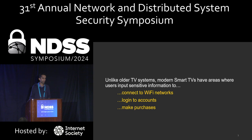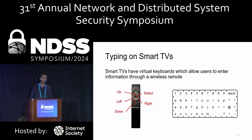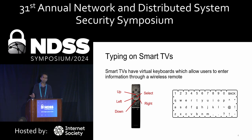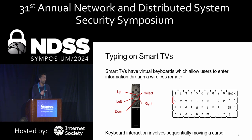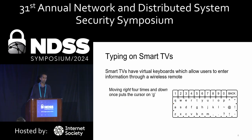The way that users input information into smart televisions is through an on-screen virtual keyboard, which looks like something shown here. Users interact with these keyboards through a wireless remote which contains a direction pad. Individuals control a cursor by sequentially moving it through directional commands. For example, if the cursor is on the key Q and we want to move to the key G, you can hit the right button four times and the down button once to get to the desired place.